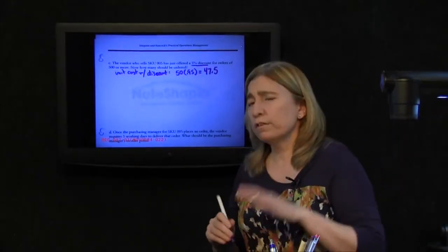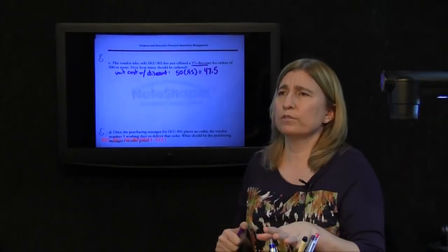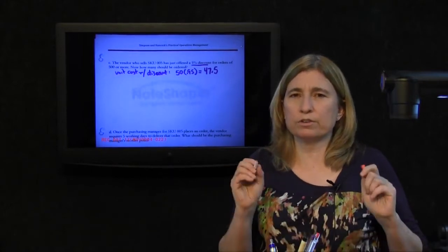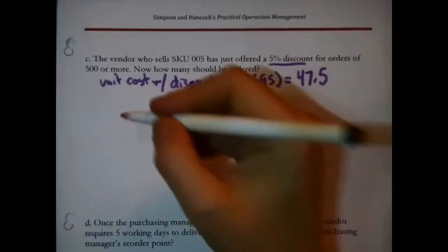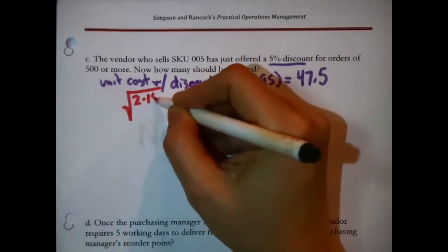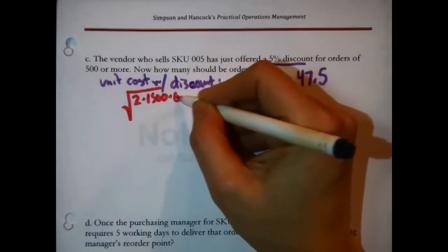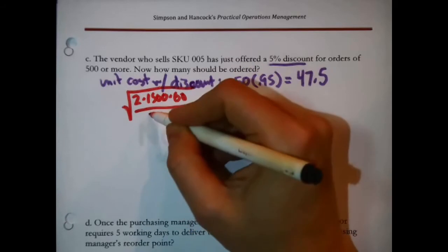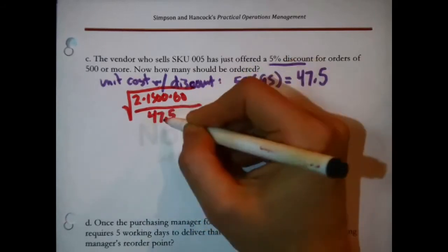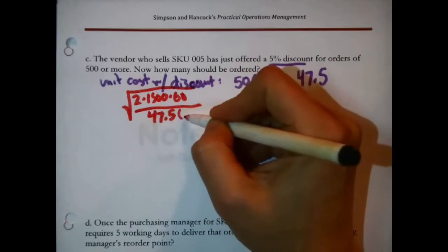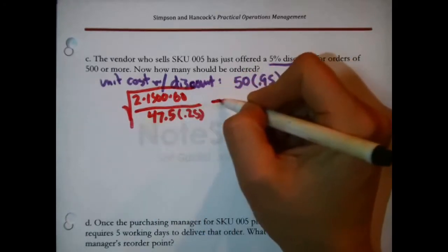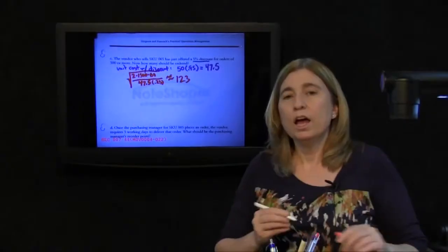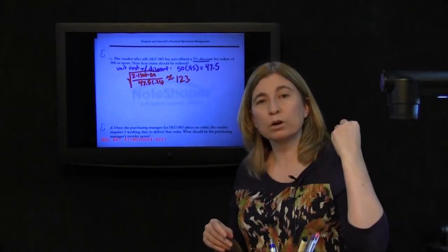So, if in fact we were getting this discount, we wouldn't be paying $50 each. We'd be paying $47.50 each. So, first off, I'm going to test if there's a new EOQ that I can use. So, I just say 2 times 1500, that's our D, times 60, that's our S, divided by H. Now, remember, H is actually the unit cost, which is, this is the part that changed. $47.50 times that same old 25%. And I remember to take the square root, and I check it out, and it comes out pretty messy. It's about 123. It's not that much larger than the original one we got on the page before.